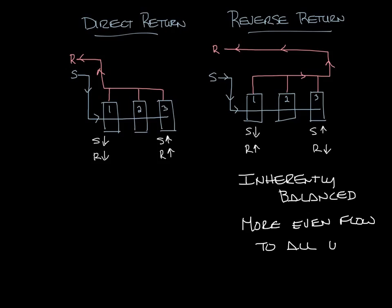You can see that the reverse return has a longer path so the direct return will have less piping which will reduce your first cost. But the benefits of having the inherently balanced system can outweigh the additional cost of the extra piping so you need to do a complete cost analysis.